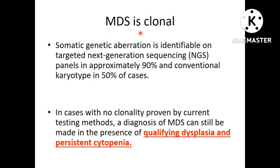MDS is clonal in almost all cases. Somatic genetic aberrations are detected in approximately 90% of cases by NGS and in approximately 50% of cases by conventional karyotyping. In cases with no clonality proven by current testing methods like NGS and karyotyping, a diagnosis of MDS can still be made in the presence of dysplasia and persistent cytopenia.